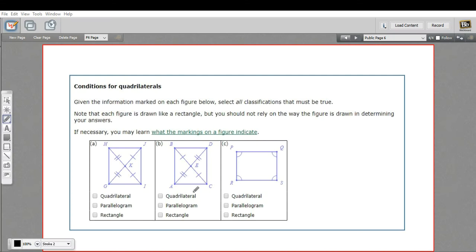In this problem, we have some diagrams of figures that maybe are quadrilaterals. They look like quadrilaterals. They seem to all have four sides. And we have to decide which categories they fit in.